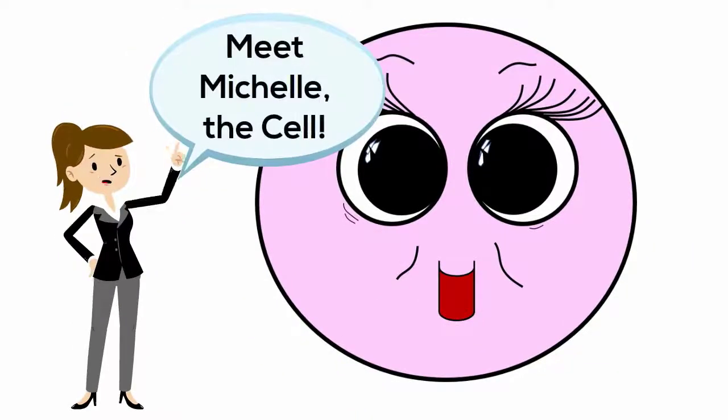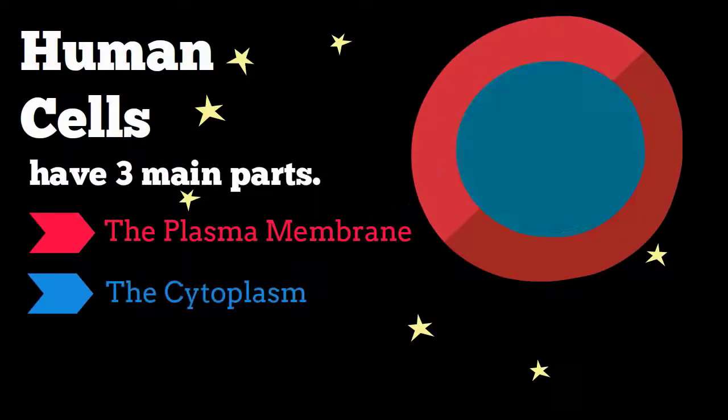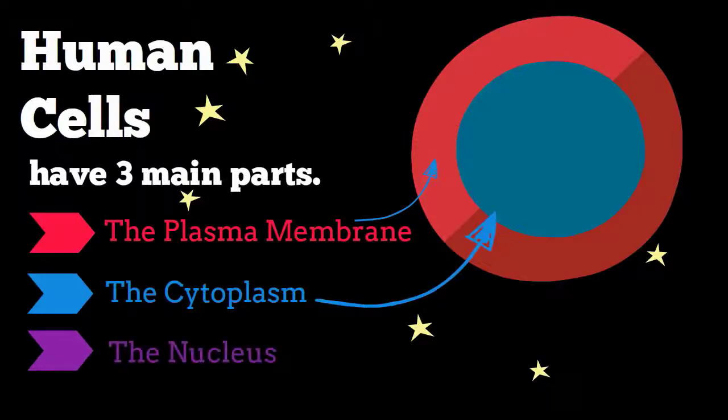Meet Michelle the cell. Human cells have three main parts: the plasma membrane, the cytoplasm, and the nucleus.